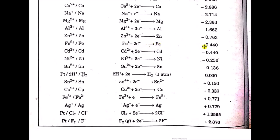The iron electrode has a reduction potential of minus 0.440 volts. Moving further, the reduction potential becomes positive. For the copper electrode, when cupric ions gain electrons they are converted into copper metal with a reduction potential of plus 0.337 volts. The silver electrode has a reduction potential of plus 0.779 volts, and the fluorine electrode has a reduction potential of plus 2.870 volts.